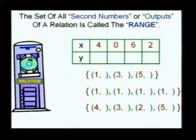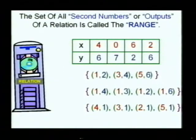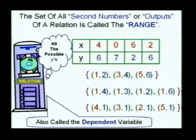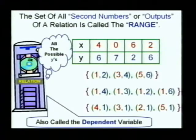If the first number is the domain, the second number — or output, if you were a computer person — is called the range. In our first relation, the range would be 6, 7, 2, and 6. If this was a graph, it would be all the possible y values. You don't get to pick that — the formula will decide what y is, so we call that the dependent variable, because it depends on what you picked.